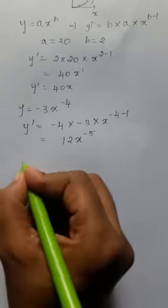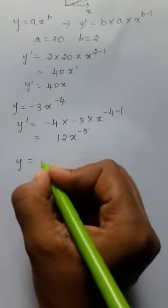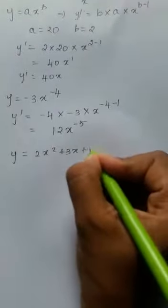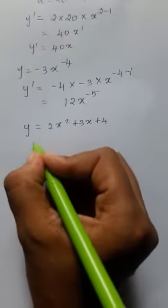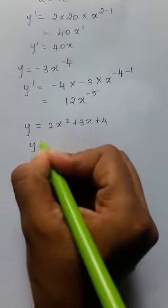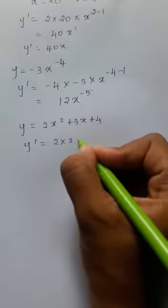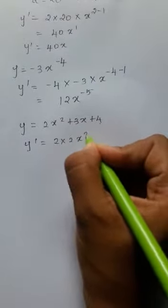Y equals 2x squared plus 3x plus 4. We do it in a similar way. So my derivative y dash equals 2 into 2x to the power 2 minus 1, and the next term...